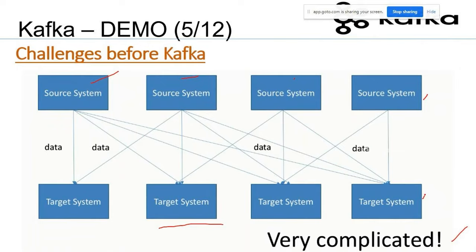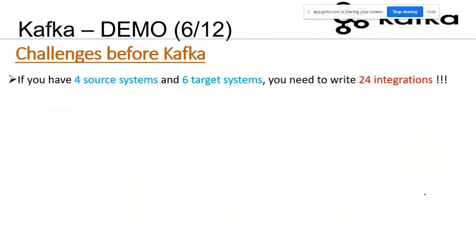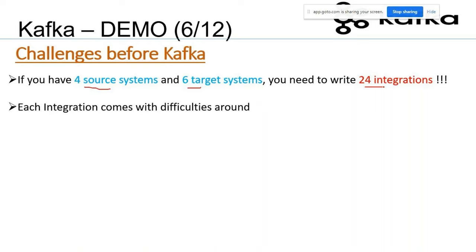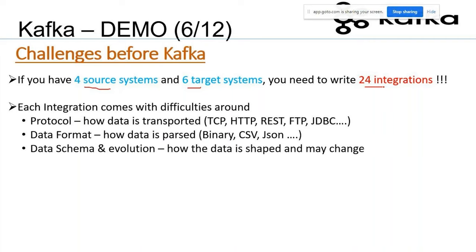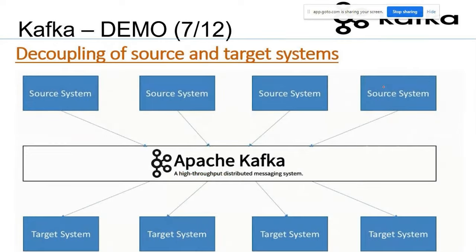For example, if you have four source systems and six target systems, you need to write 24 integrations — four multiplied by six. Each integration involves overcoming difficulties in terms of protocol, data format, and data schema. Designing those 24 integrations while overcoming these protocols is very time-consuming. Now imagine doing this for millions of applications — it would be nearly impossible. Kafka came into picture to simplify this.